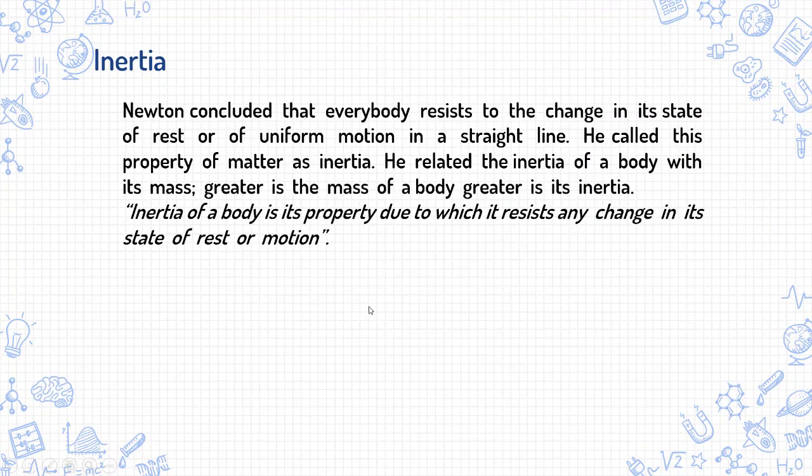Next is inertia. Newton concluded that every body resists a change in its state of rest or of uniform motion in a straight line. He called this property of matter inertia, and he related the inertia of a body with its mass. Greater mass means greater inertia, and smaller mass means smaller inertia. So inertia of a body is its property due to which it resists any change in its state of rest or motion.